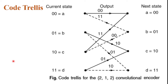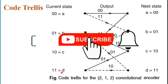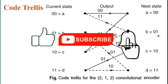This is the figure of the code trellis for the (2,1,2) convolutional encoder. Two comma one comma two means n is equal to 2, k is equal to 1, and L is equal to 2. In this figure the current states are: A is equal to 00, B is equal to 01, C is equal to 10, and D is equal to 11, and the next states are A, B, C, D.